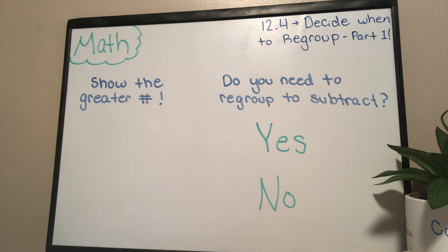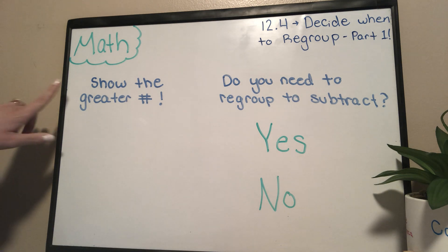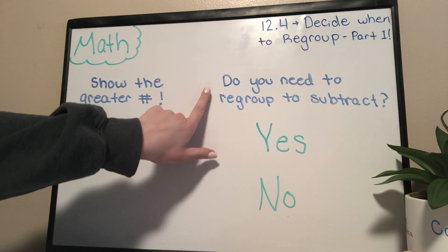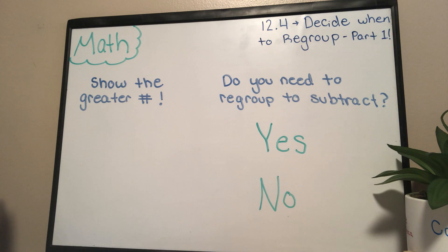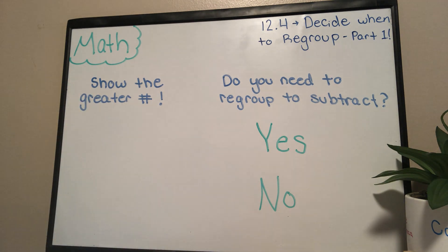I think it might be page 75 or 76. Make sure that you have that in front of you and a pencil so you can work with me in your book. I know the directions over there say use with a work mat, number 3, and then the 10s and 1s sticks, but we're not going to do that. We're just working on the first two columns where it says show the greater number and do you need to regroup to subtract.